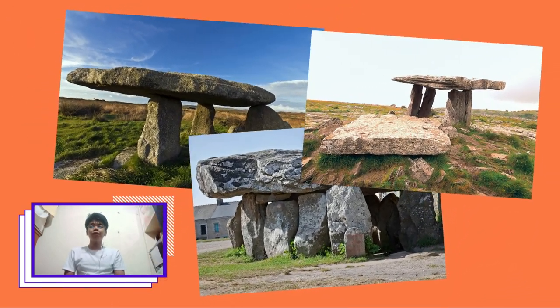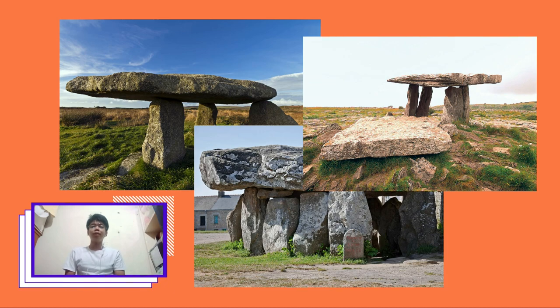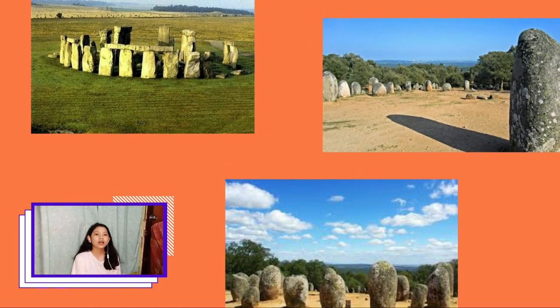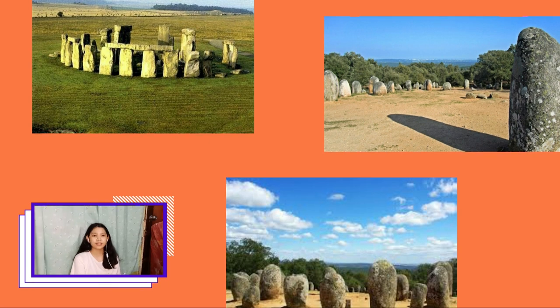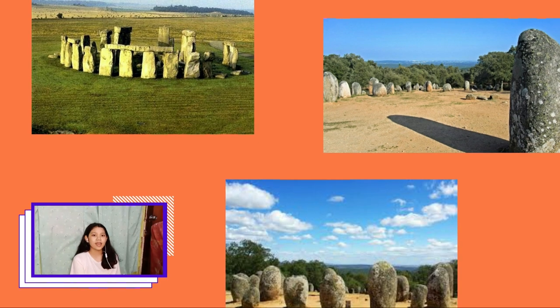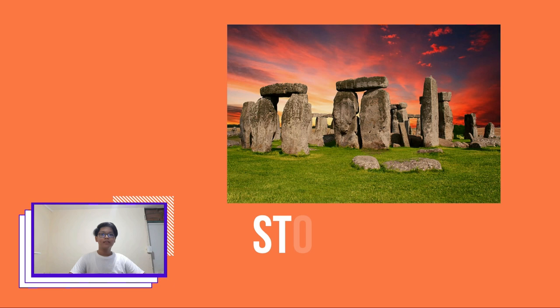The second main type is the dolmen. It originated from the expression meaning a stone table and served as a grave or altar. Cromlech is the third main type of megalith stones. Cromlech is a Brittonic word — croc means bent or curved, and left means slab or flat stone. Literally, it is a circle of standing stones. This is the Stonehenge — the most preserved megalithic site in Europe.